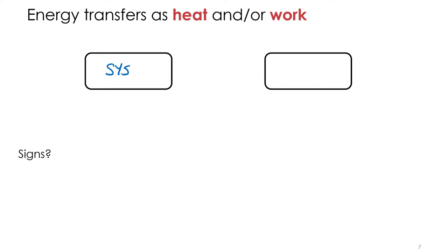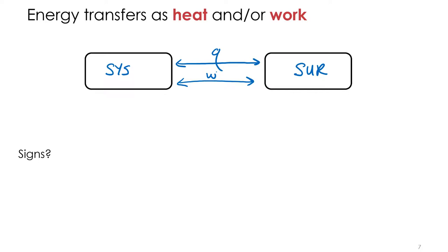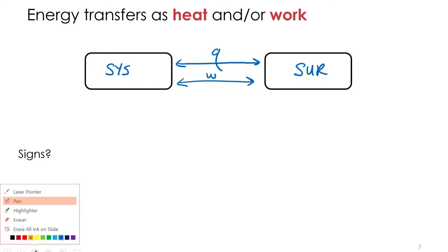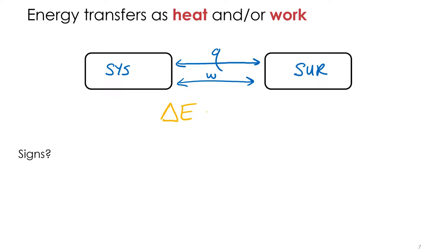So we've got our system and we've got our surroundings. We can transfer energy to or from the system to the surroundings, or surroundings to the system. They can transfer via heat, Q, or work. So if you added both of those up — figured out how much heat was transferred and how much work was done — you just figured out how much energy was transferred. Those are the only two ways we can transfer energy. So the equation is: change in energy equals the sum of heat plus work.